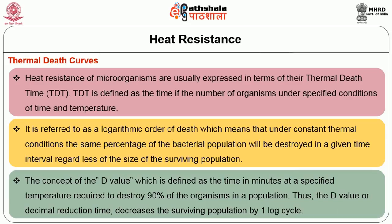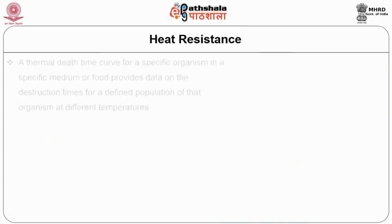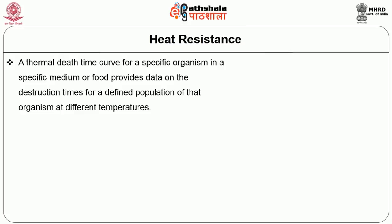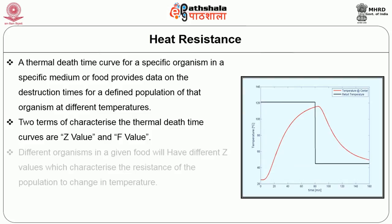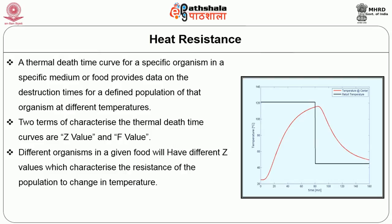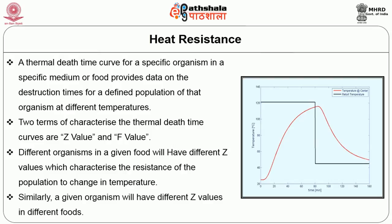The D value, or decimal reduction time, is defined as the time in minutes at a specified temperature required to destroy 90% of the organisms in the population — it decreases the surviving population by one log cycle. A thermal death time curve for a specific organism in a specific medium provides data on destruction time for a defined population at different temperatures. Food science uses Z value and F value to characterize thermal death time curves. Different organisms in a given food will have different Z values, which characterize resistance to change in temperature; similarly, a given organism will have different Z values in different foods.